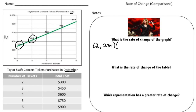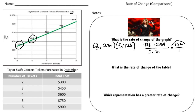We know the cost of two tickets is $284 and the cost of three tickets is $426. The way you find the rate of change is to take the difference of the Y values over the difference of the X values. So that's going to be 426 minus 284 over 3 minus 2, which gives us 142 over 1. So every Taylor Swift ticket costs $142 — that's the rate of change.